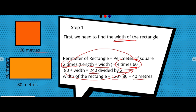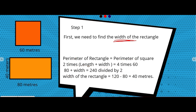We use the opposite operation to isolate the variable and find the value of width. The 2 was in multiplication, so it becomes division when moved across the equal sign. Therefore, the width of the rectangle is 40 meters.